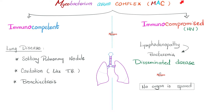Mycobacterium avium complex: if you are immunocompetent, you can get a solitary pulmonary nodule, or cavitation similar to tuberculosis, or bronchiectasis. If you have weak immunity, you can get lymphadenopathy, then bacteremia, then disseminated infections all over the body where no organ is spared.